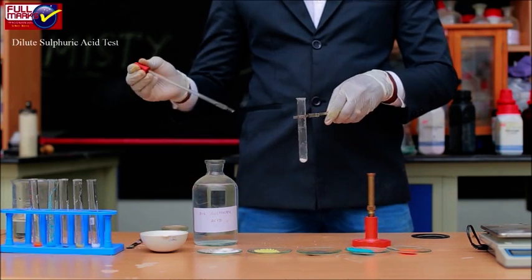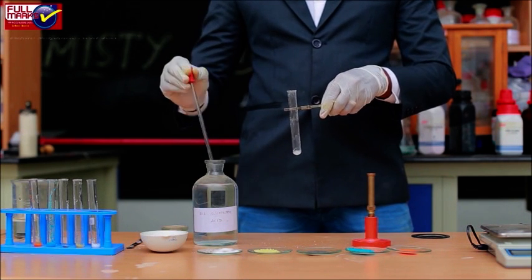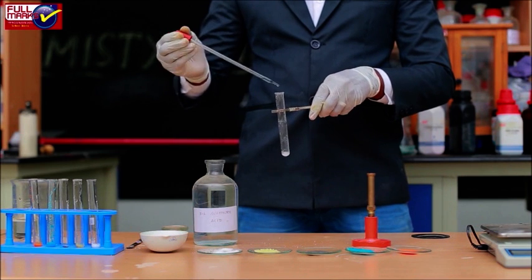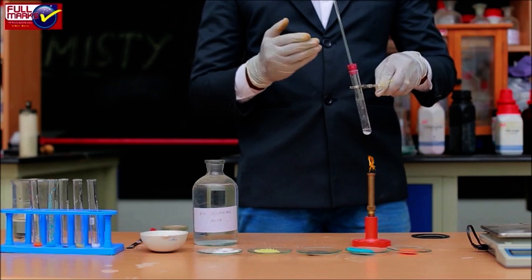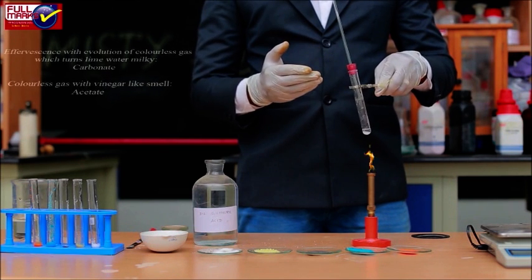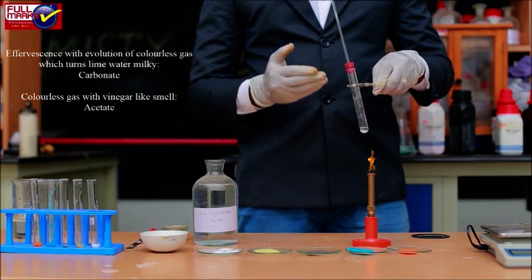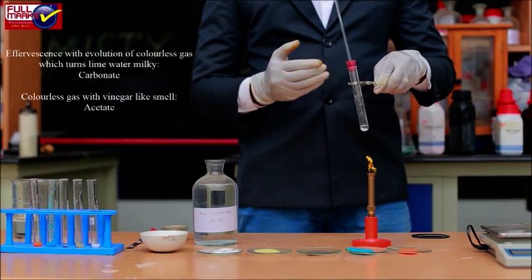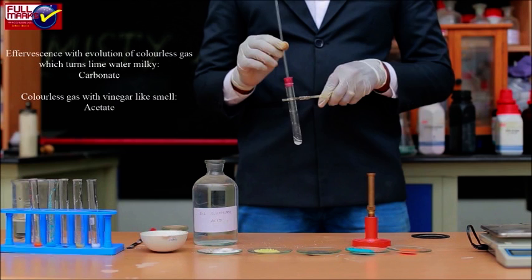Dilute sulfuric acid test: A pinch of salt is taken in a test tube. Dilute sulfuric acid is added so that the salt gets submerged. If no reaction is observed at room temperature, then the solution is heated. If effervescence with evolution of colorless gas occurs which turns lime water milky, it's a carbonate. If colorless gas with vinegar-like smell is observed, it's acetate. Finally, one cation and one anion in a given salt is determined.